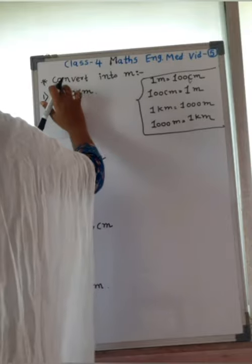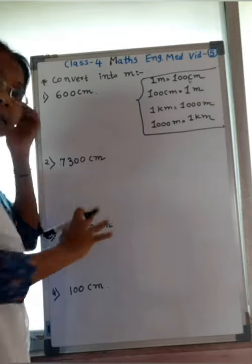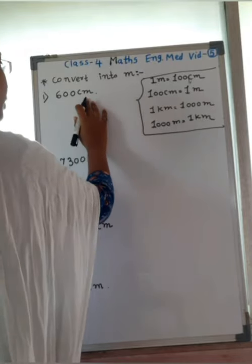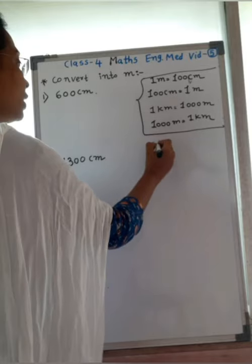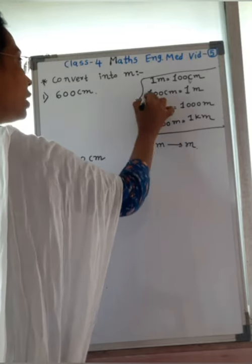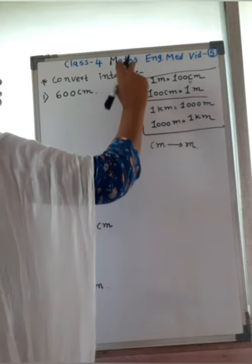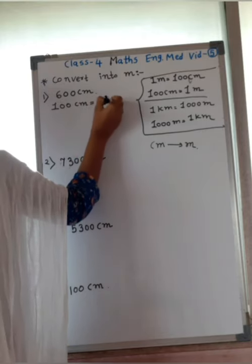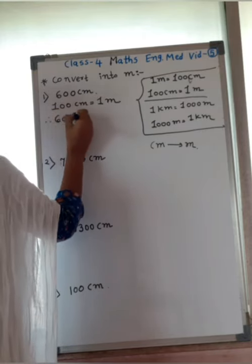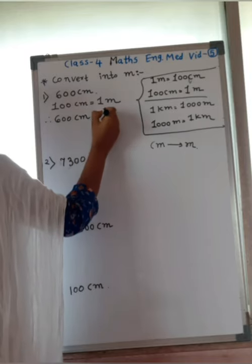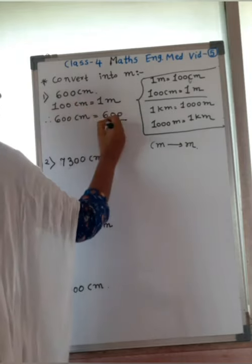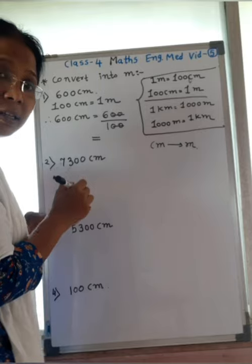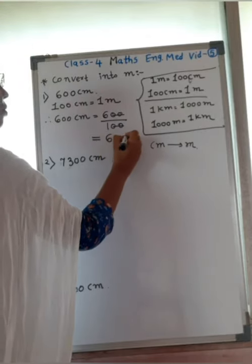Now convert into meter — centimeter is given. Here, 600 centimeter is given; convert into meter. Use this formula: 100 centimeter equals 1 meter. So, your question is 600 centimeter equals 600 divided by 100. The two zeros cancel, so the answer is 6 meter.